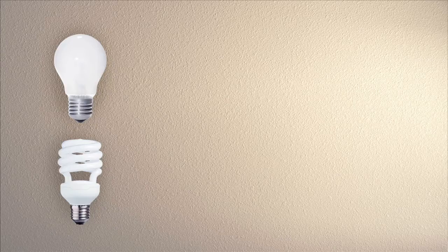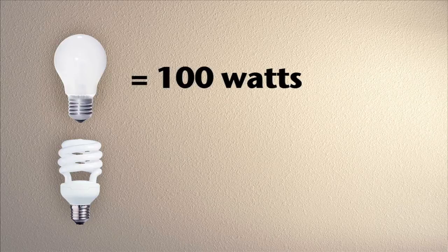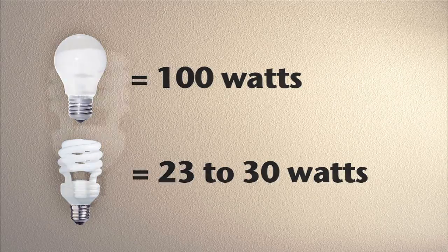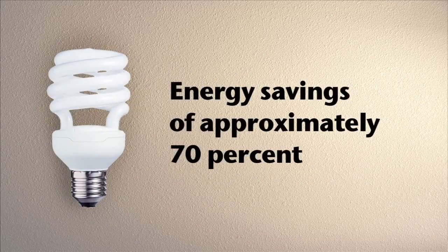So when any electrical device is turned on, the number of kilowatt hours it uses is directly related to the number of watts it uses. That's why it's so important to purchase efficient appliances. Think back to that example of the incandescent light bulb — it uses 100 watts, but a compact fluorescent bulb that produces the same amount of light uses only 23 to 30 watts. That means an energy savings of approximately 70%.